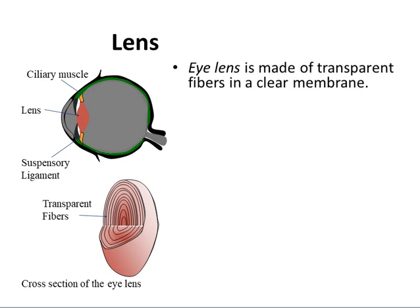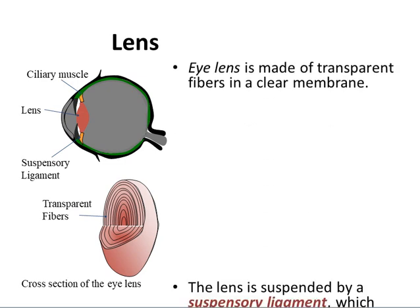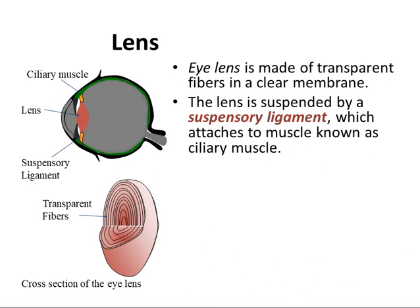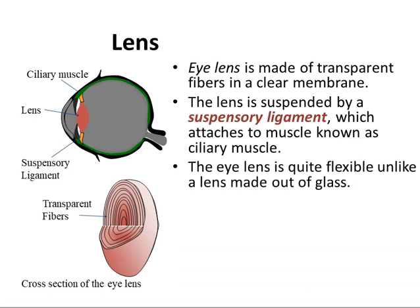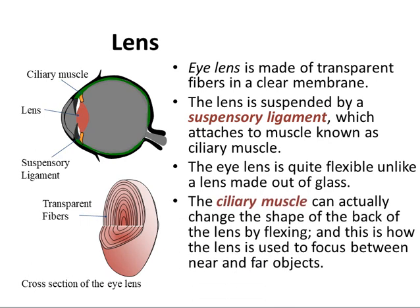The eye lens is made up of transparent fibres in a clear membrane. The lens is suspended by a suspensory ligament which attaches to a muscle known as the ciliary muscle. The eye lens is quite flexible, unlike a lens made of glass. The ciliary muscles can change the shape of the back of the lens by flexing, and this is how the lens is used to focus between near and far objects.